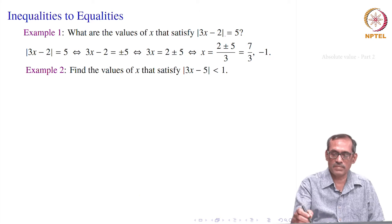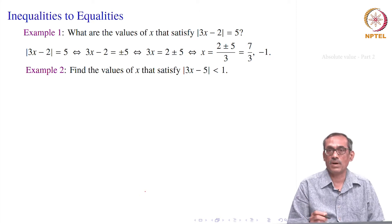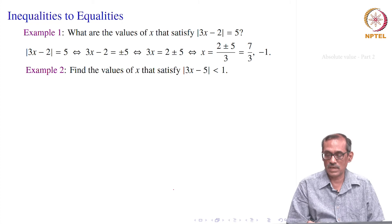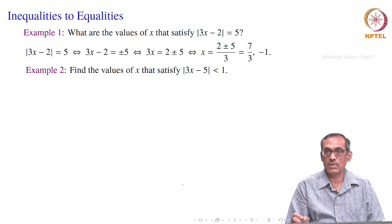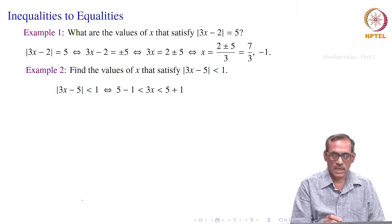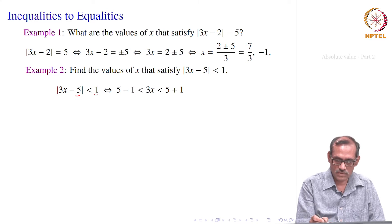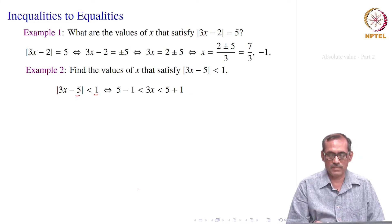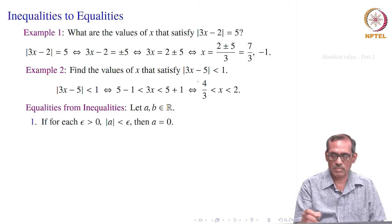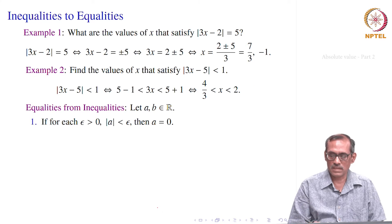Similarly, let us find all real x satisfying |3x - 5| < 1. We use the earlier result: |x - a| < δ means x belongs to the δ-neighborhood of point a. So |3x - 5| < 1 gives 5 - 1 < 3x < 5 + 1, which simplifies to 4/3 < x < 2.